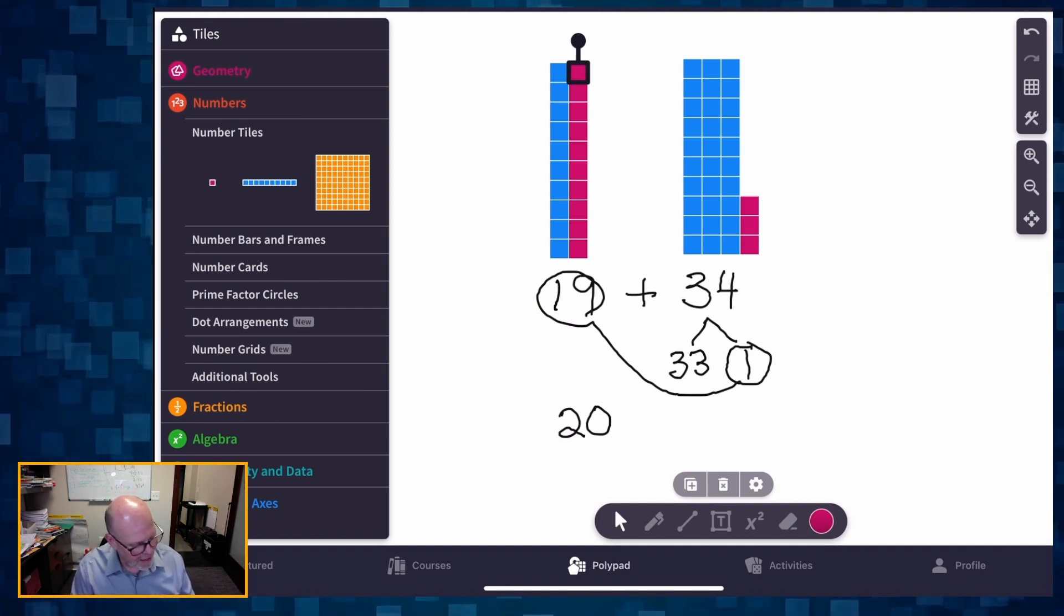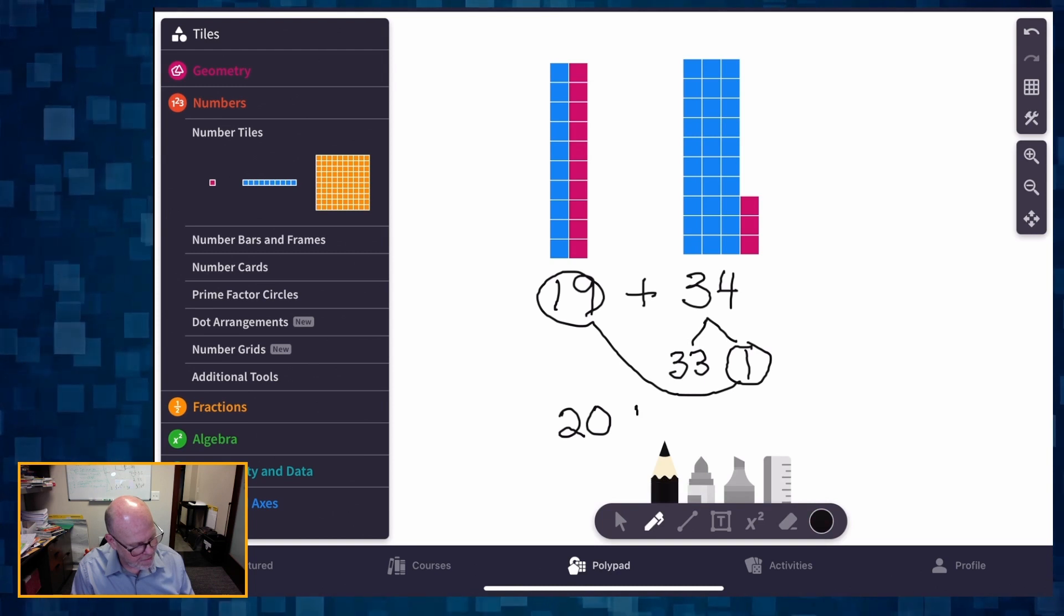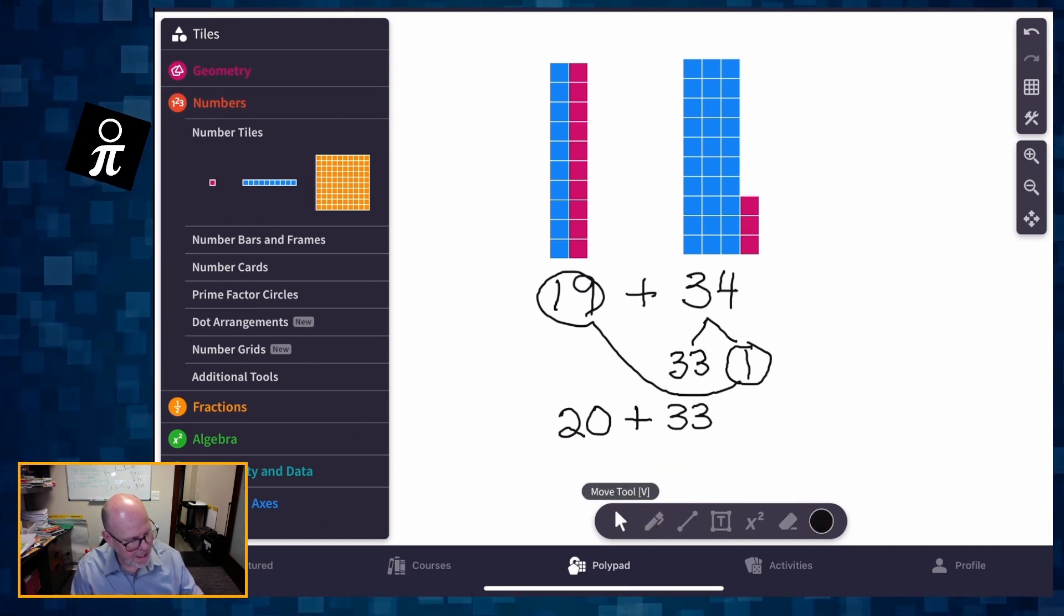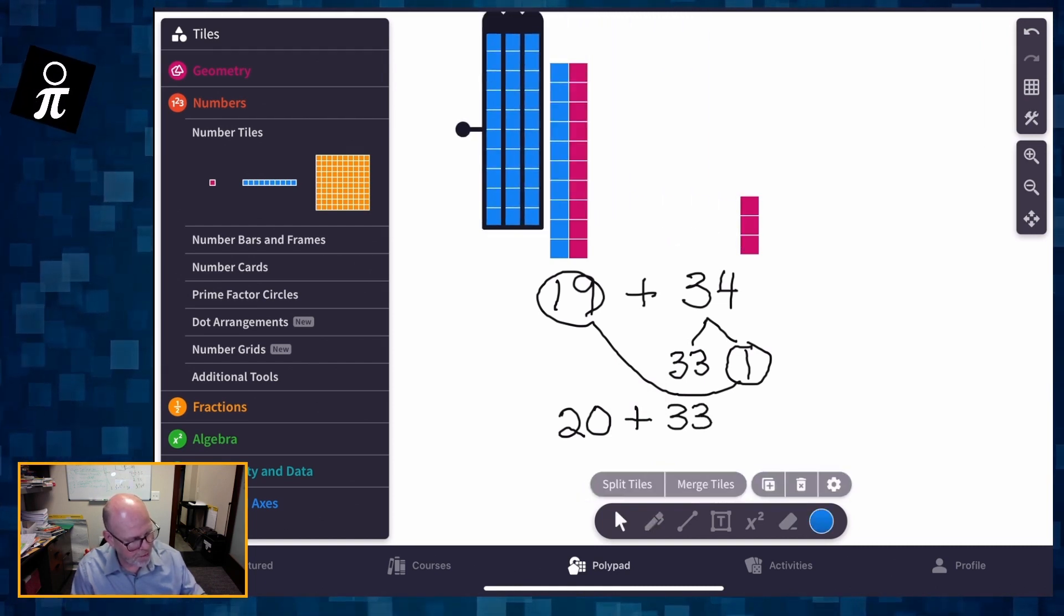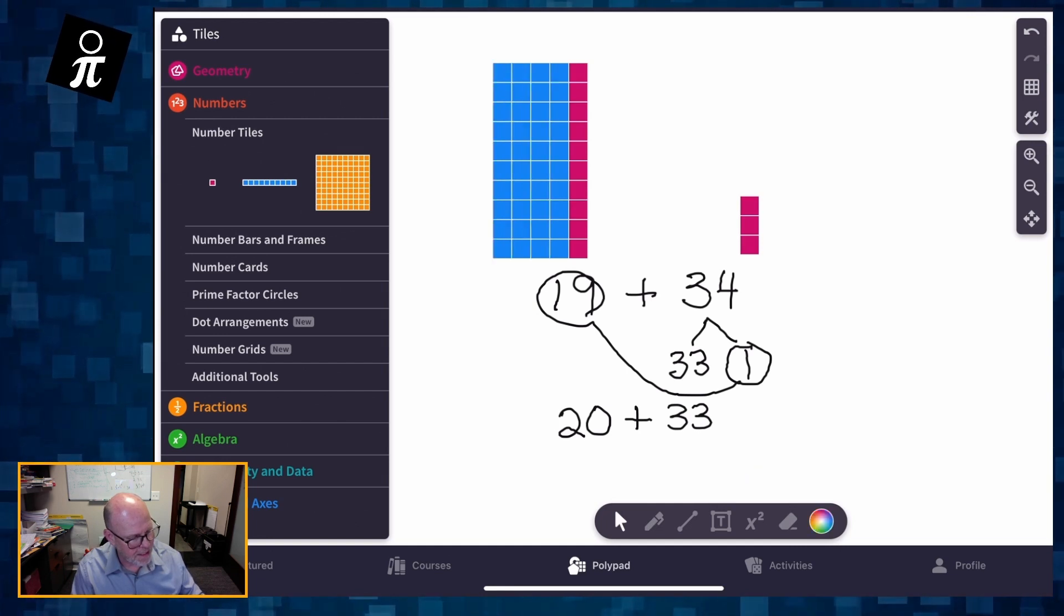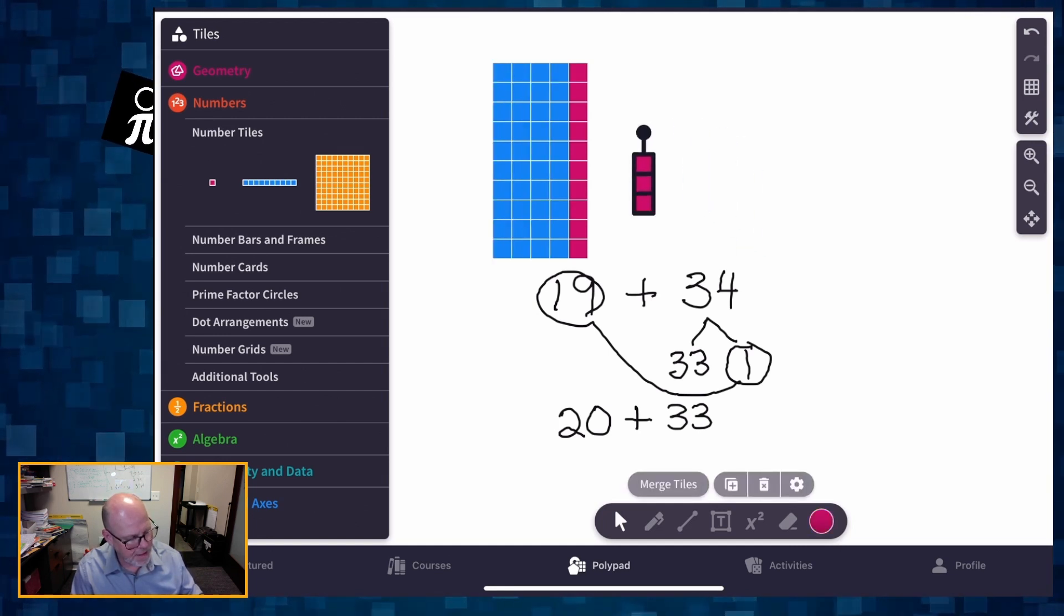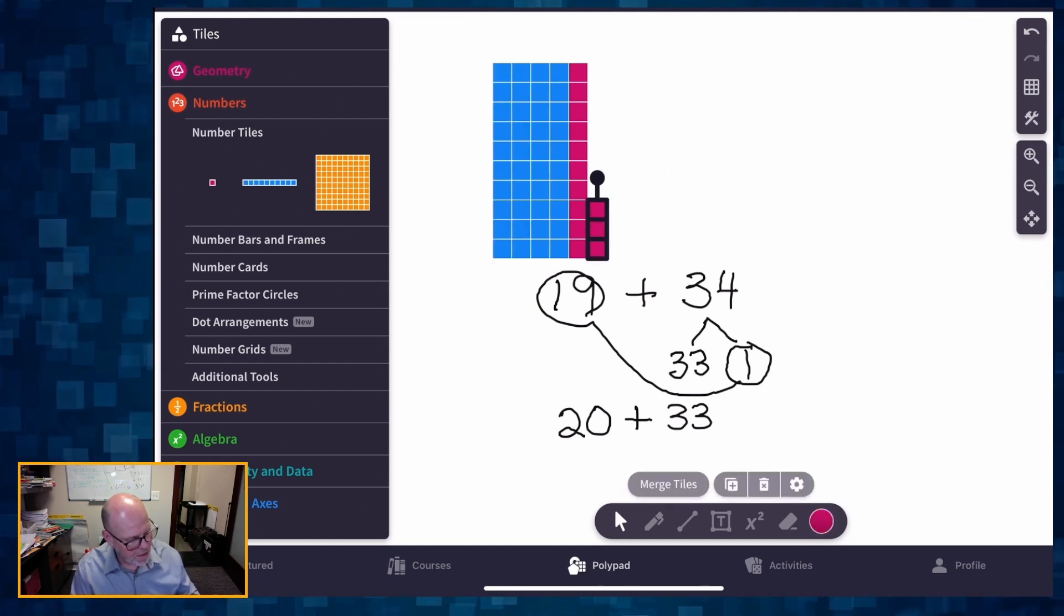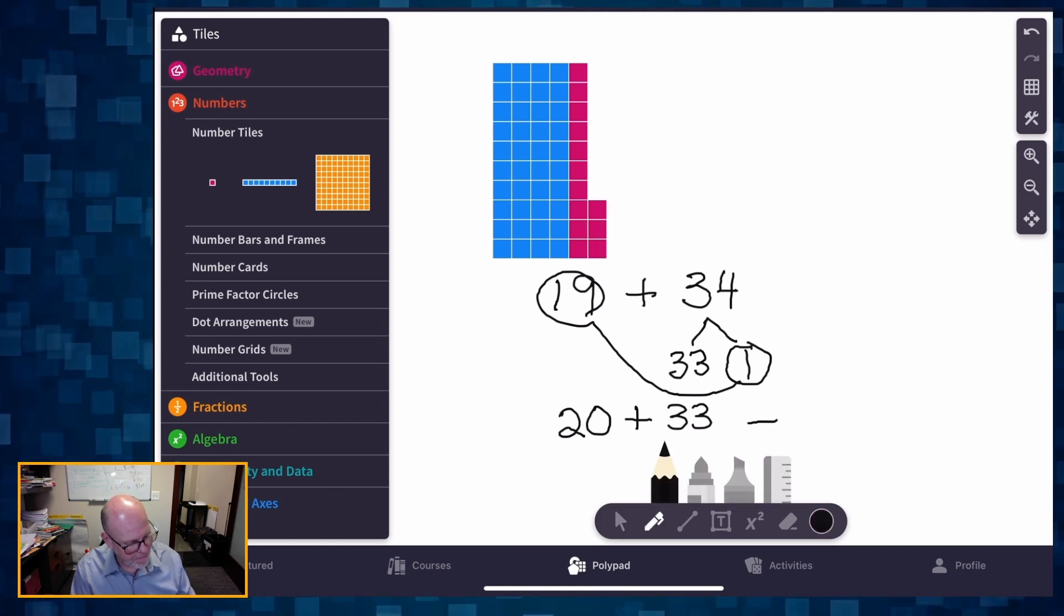And so what do I have? I'm left with 20 plus 33. And then we can take our 30, bring it over here. That gives me 50 plus these three left over. So our answer ends up being 53.